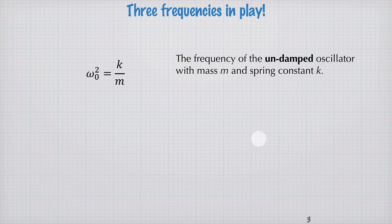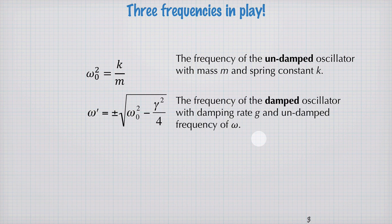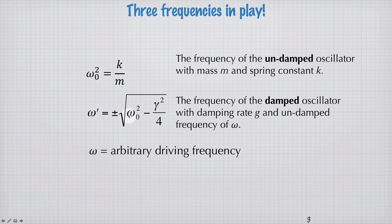We have the frequency of the undamped oscillator with mass m and spring constant k. We've got the frequency of the damped oscillator, which is very similar to the undamped oscillator but modified by the damping. If the damping is small, then these two frequencies are close to each other. And we also have the arbitrary driving frequency, omega.